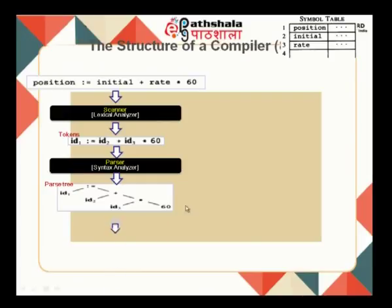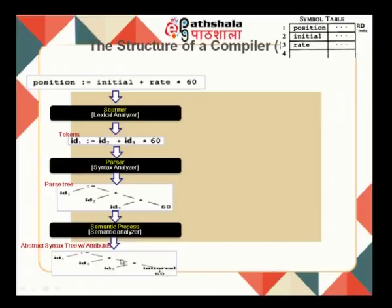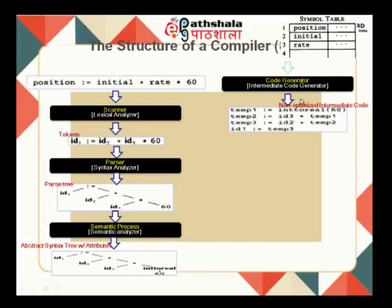The next phase is the semantic process, where type checking and coercion happen. Assuming 'rate' is a rate of interest, the integer 60 is converted to a floating-point number — a coercion is performed, converting 60 to real, i.e., 60.0. It also determines that ID 1 can only be of type floating-point because of this type coercion. This will be checked and recorded in the symbol table, and then passed to the intermediate code generation phase.